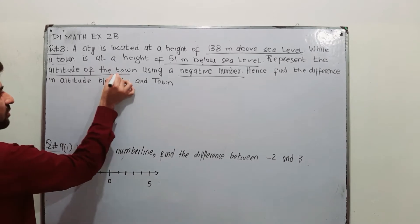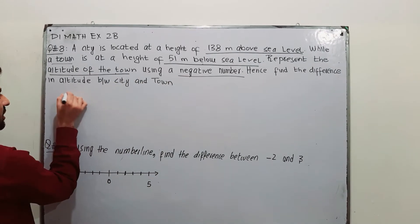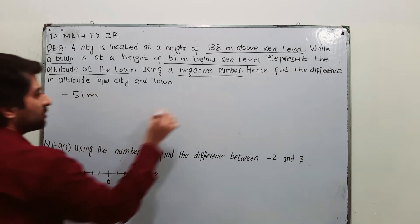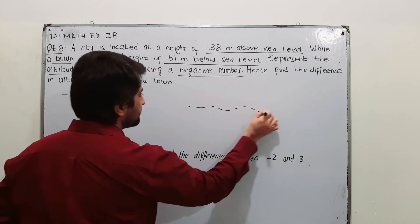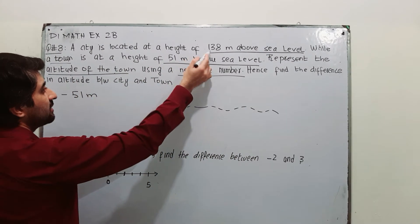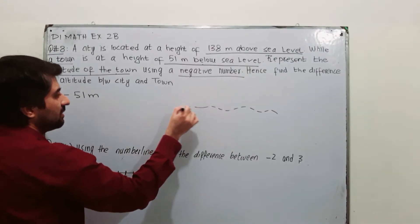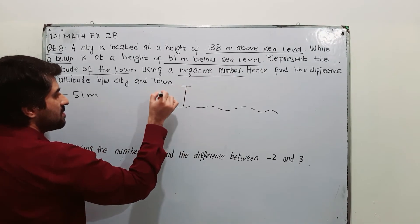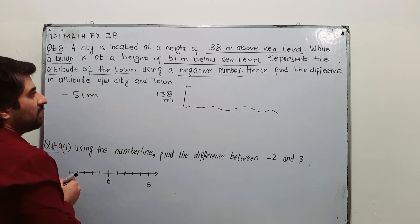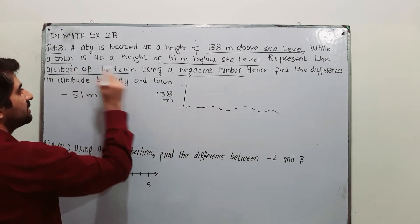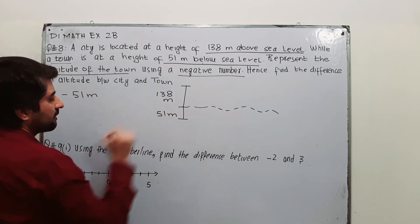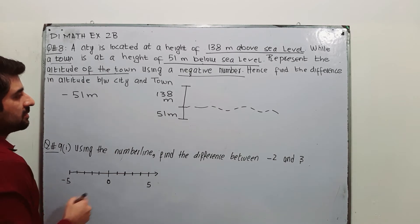So the altitude of town in negative number will be -51 meters. Suppose this is your sea level, then the city is 138 meters above sea level, while the town is 51 meters below sea level. This is the situation. This is your sea level.